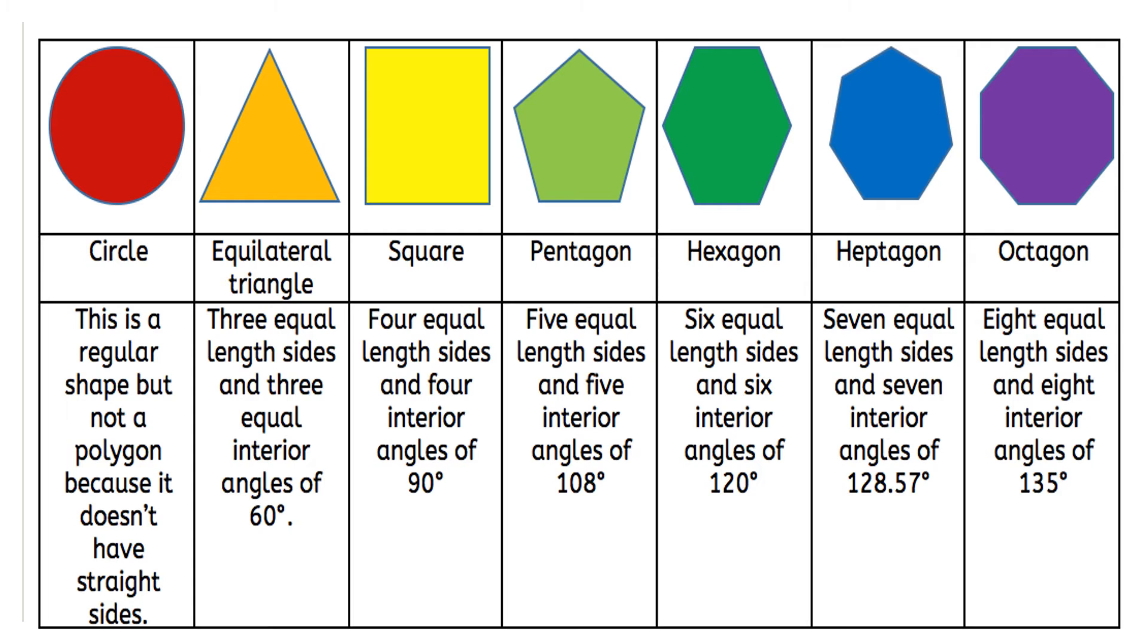Heptagon: seven equal length sides and seven interior angles of 128.57 degrees. Octagon: eight equal length sides and eight interior angles of 135 degrees.